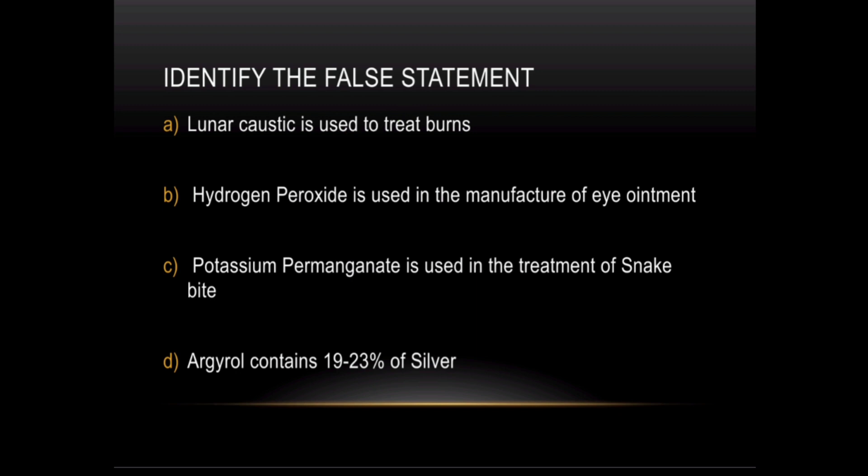Question: What is the false statement? Lunar Caustic is used for burns — that is a true statement. Potassium Permanganate is used for snake bites. Argyrol is 19–23% silver. But Hydrogen Peroxide as an iron metal agent — that is the false statement.